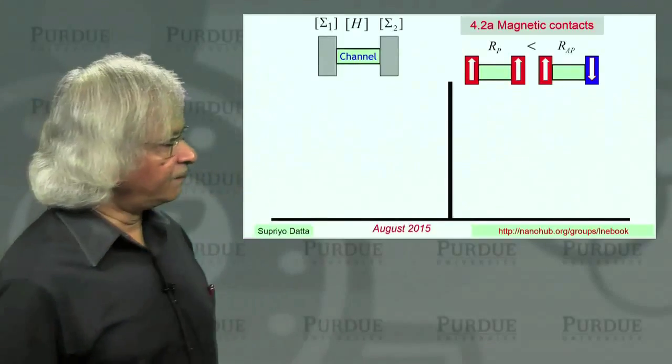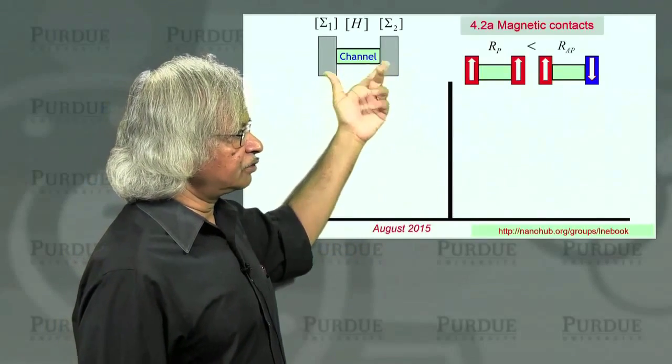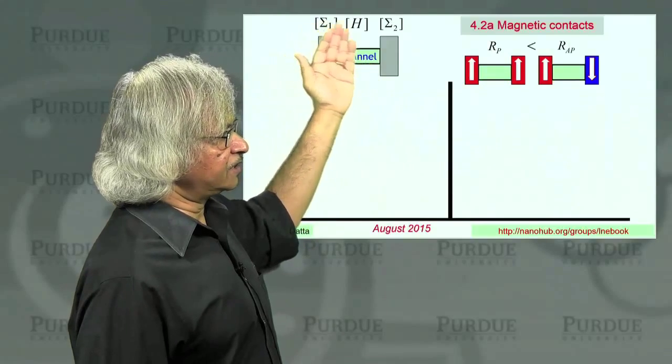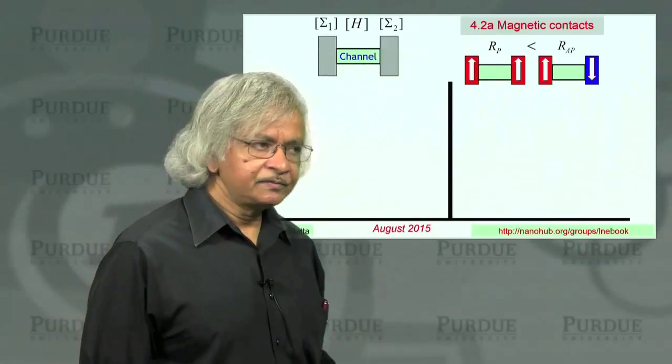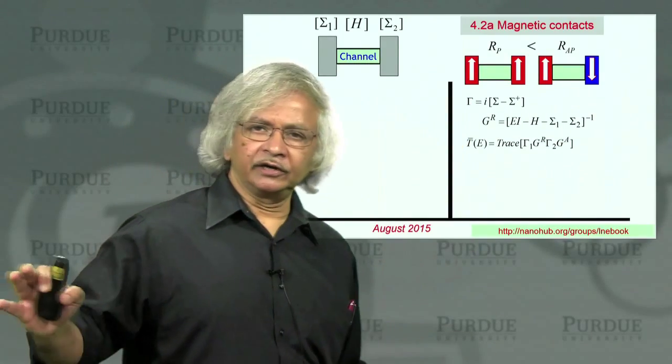Now the basic model as you remember for any channel with two contacts, we need the H that describes the channel. You need the self-energies that describe the two contacts. And once you have that, here we are talking of coherent transport.